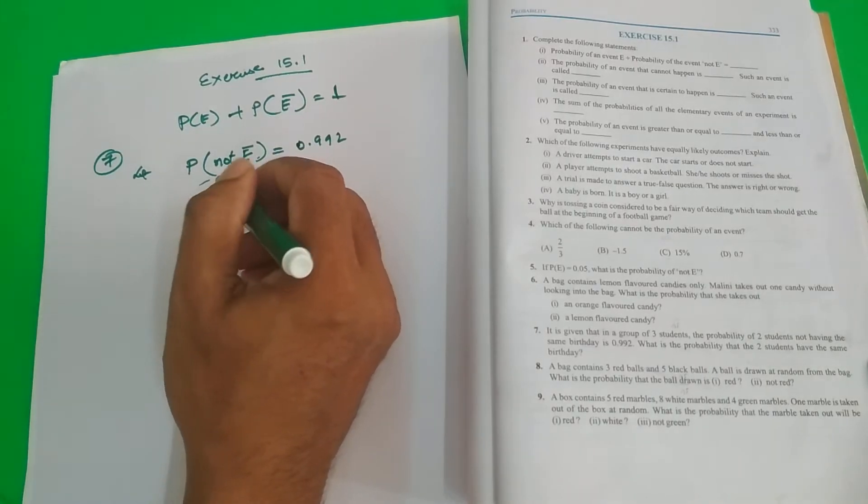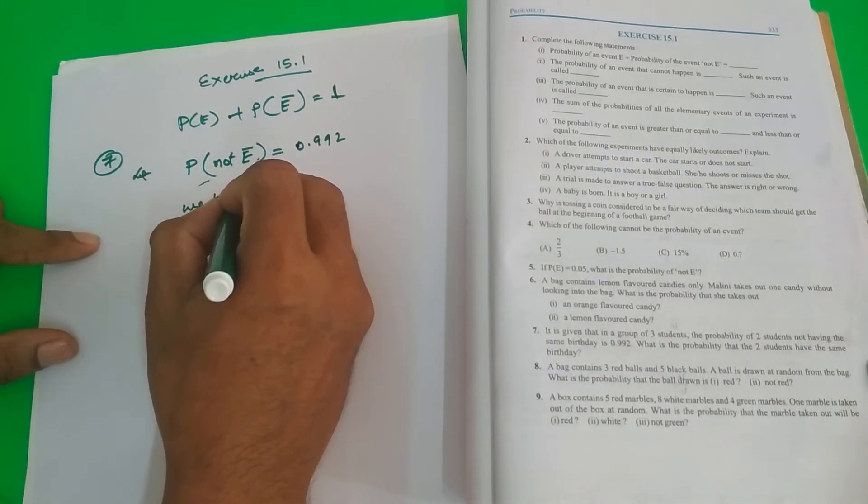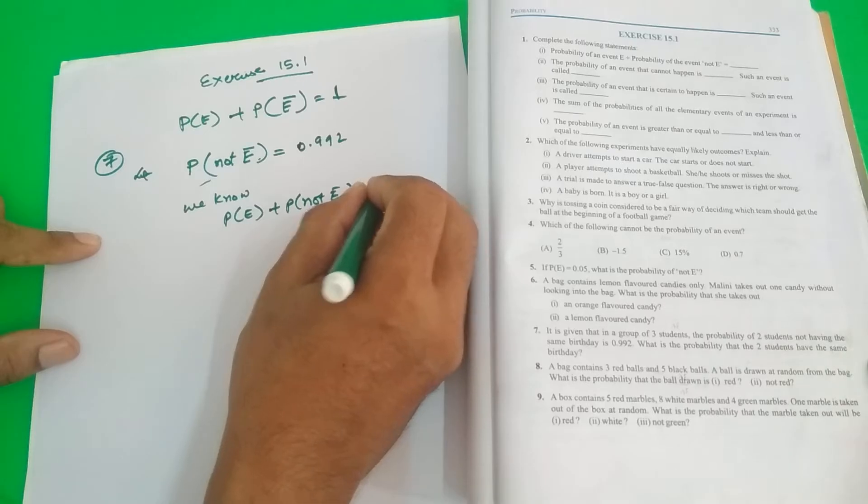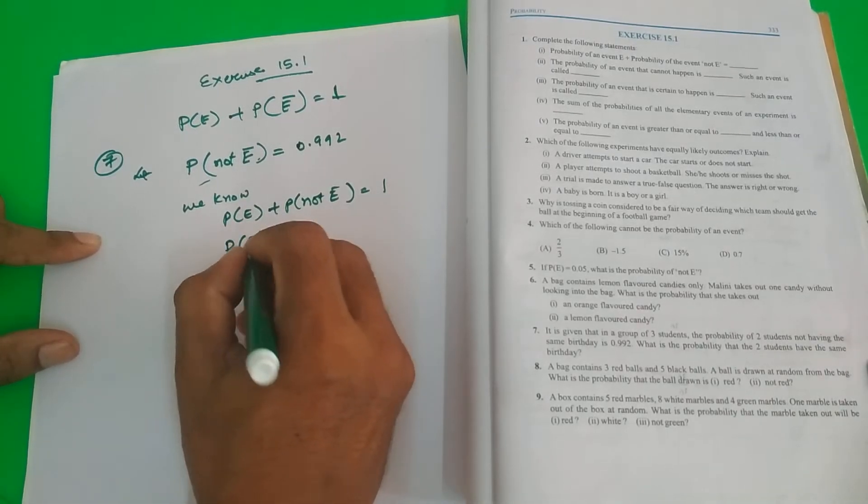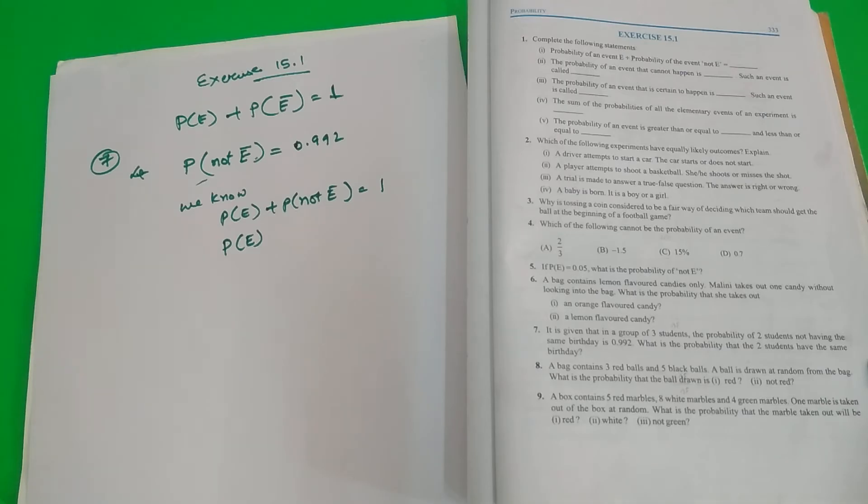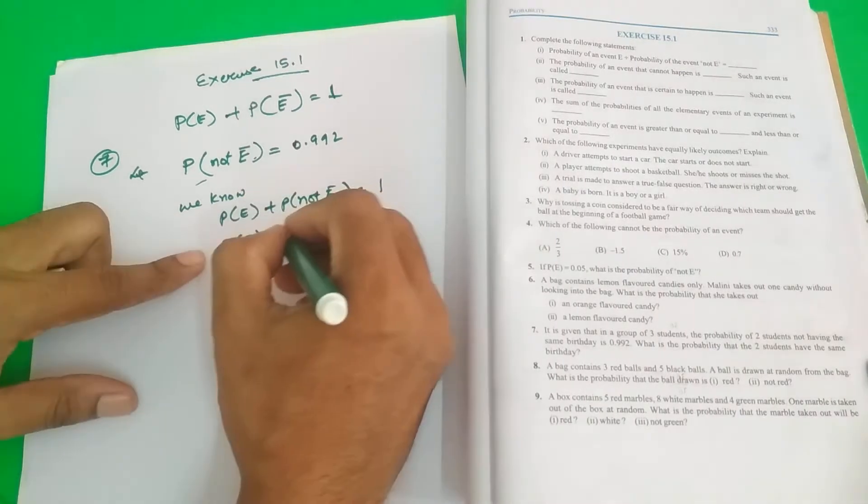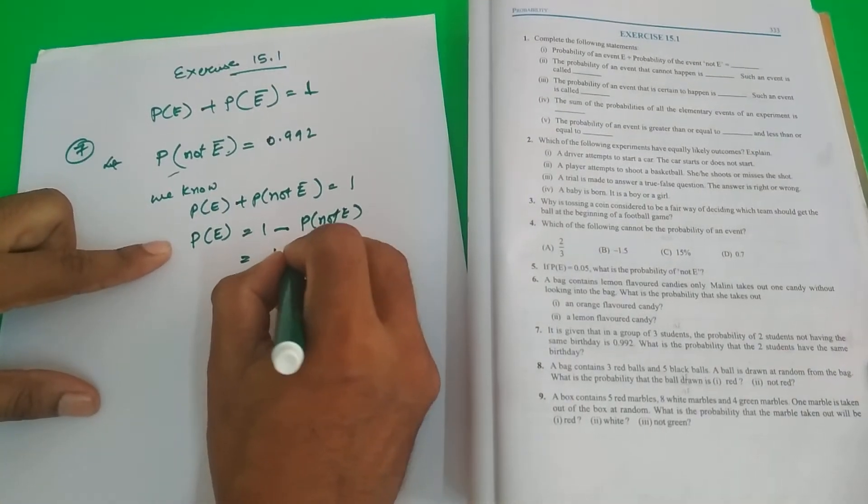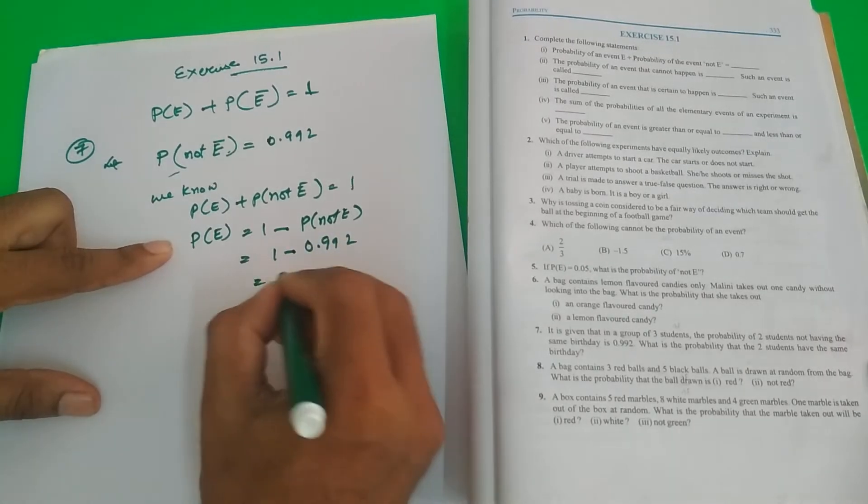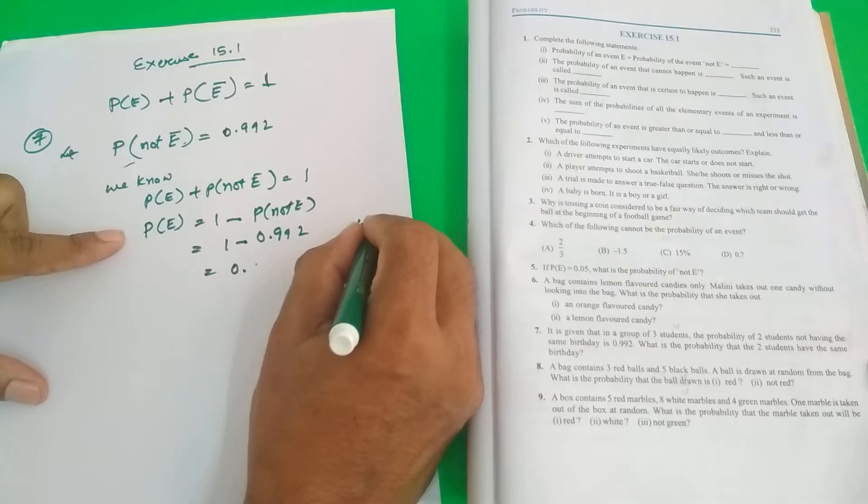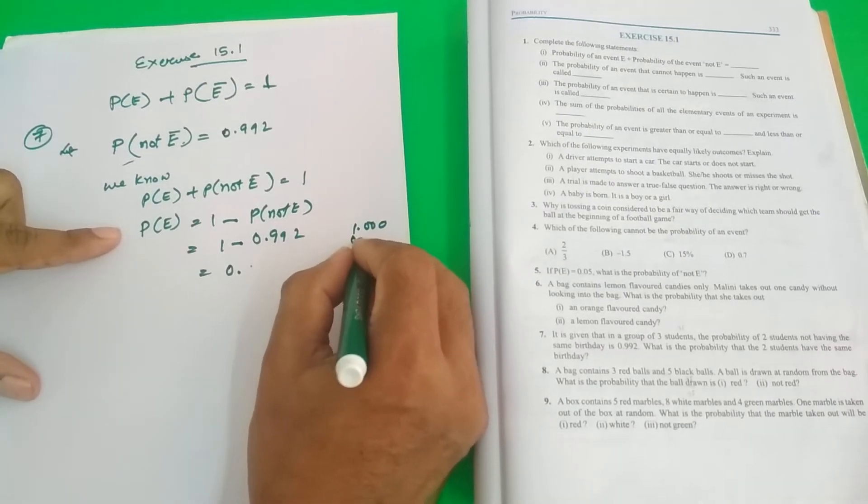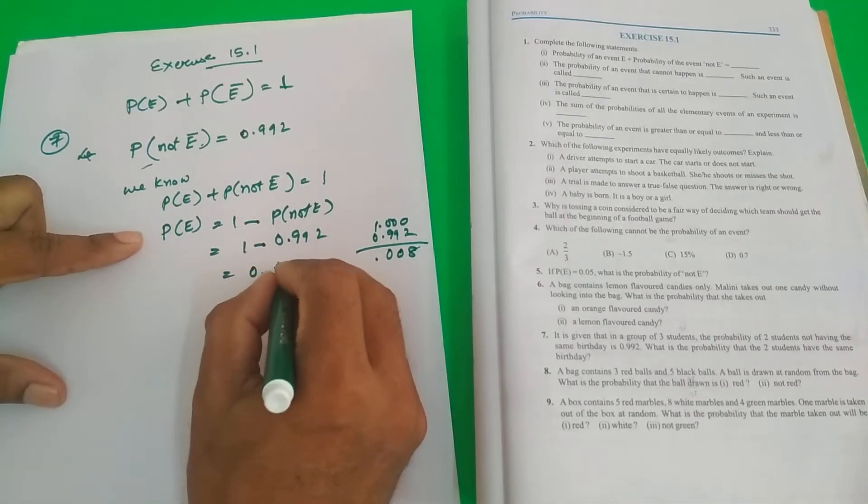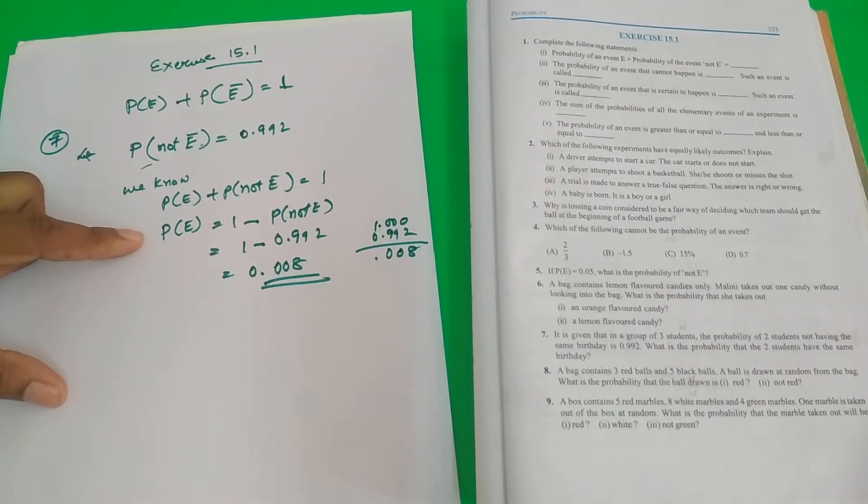Now, if I consider the event E as the birthday, we know probability of E plus probability of not E equal to 1. Probability of E is the students having the same birthday, 2 students having the same birthday. Then what we will do? 1 minus P not of E, 1 minus 0.992. This is 0.992, I will get 0.008. Very simple answer.